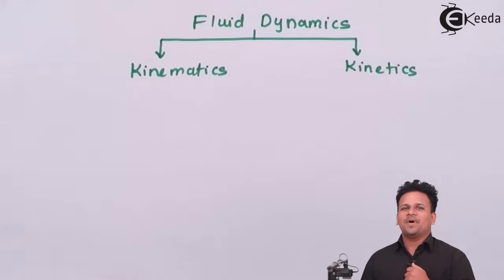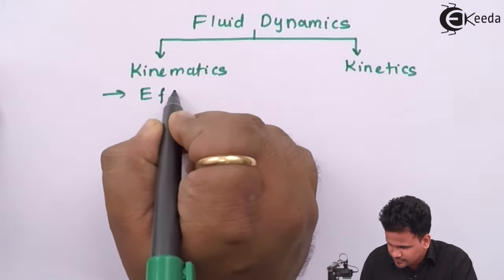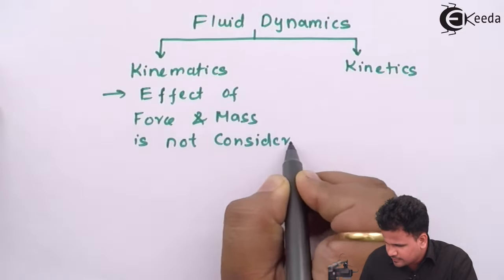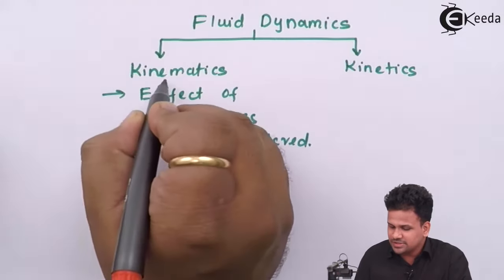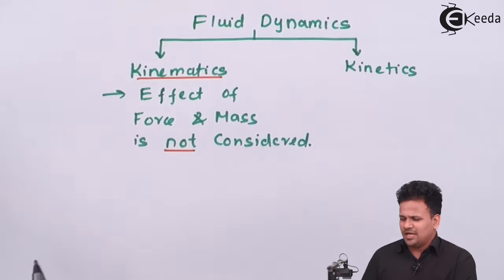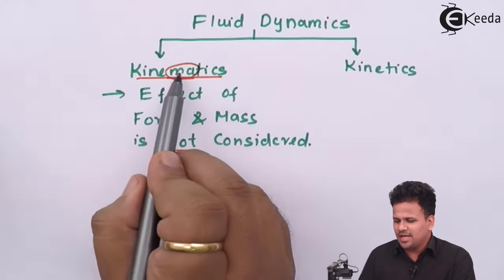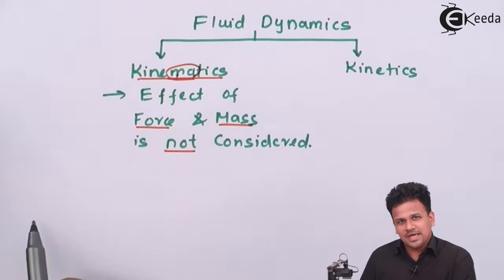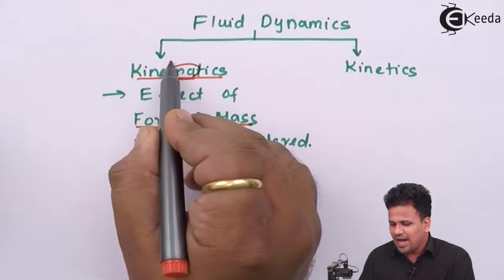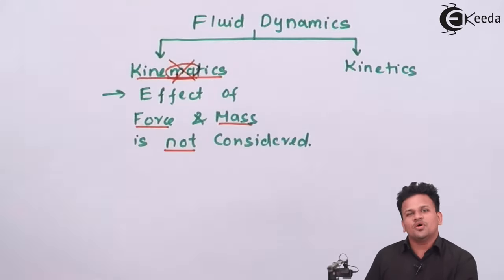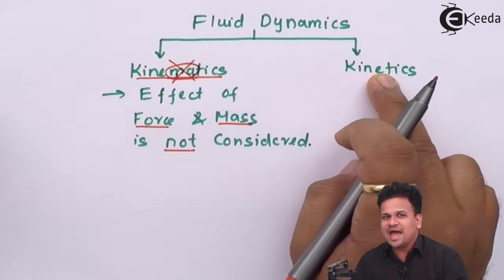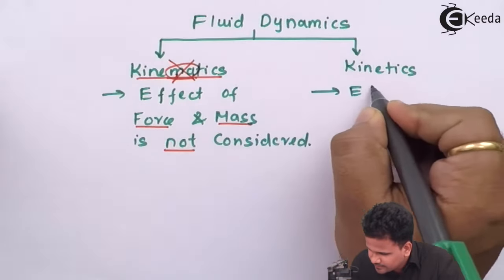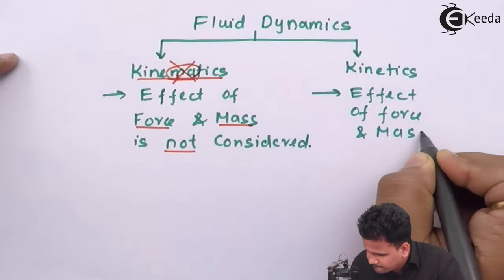Those two parts are kinematics and kinetics. Kinematics is a branch of fluid mechanics in which we do not consider the effect of force as well as mass. You can observe that in the spelling of kinematics, M×A represents force and M itself appears — yet in kinematics we do not consider force or mass. But in kinetics, we do consider the effect of force and mass.